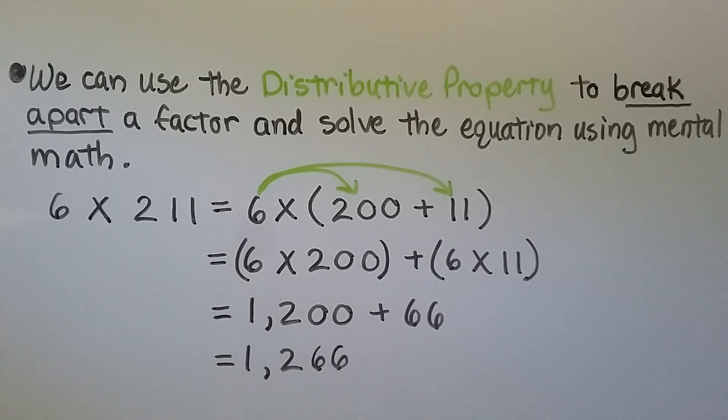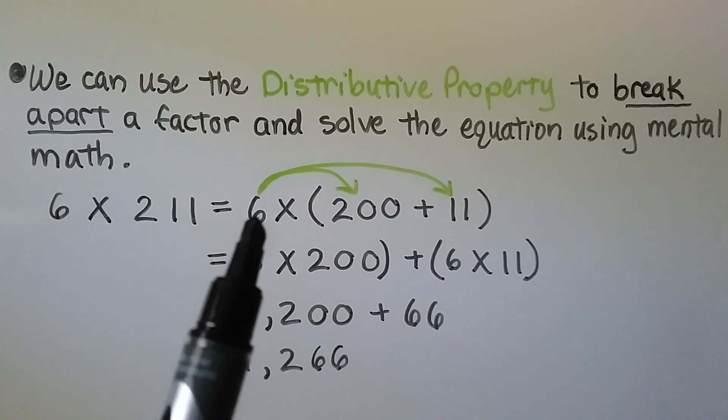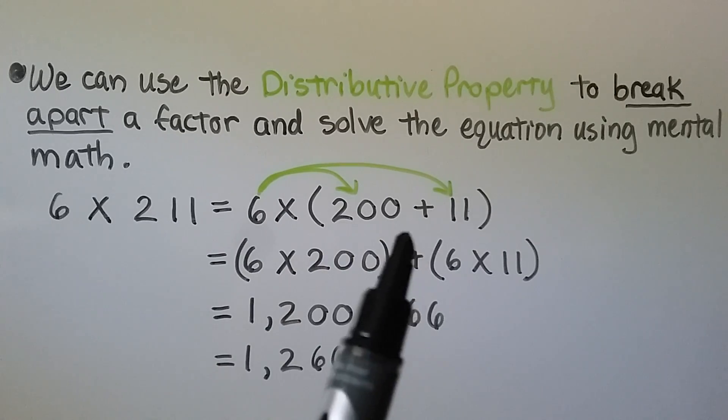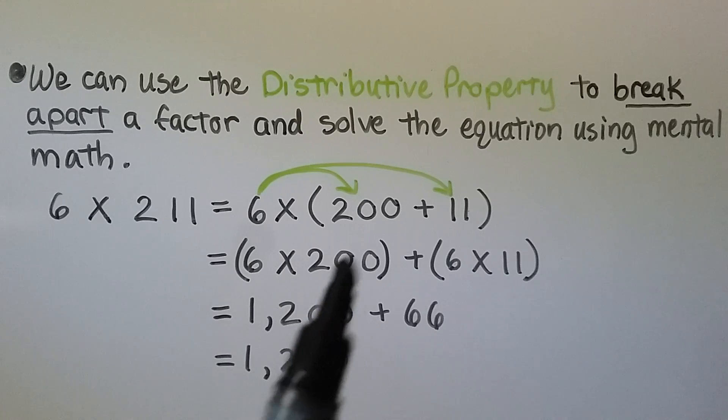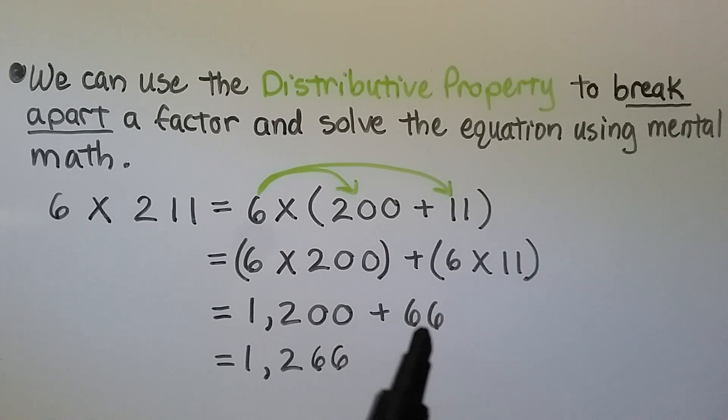Here we have another example where we can use the distributive property to break apart a factor and solve the equation using mental math. We have 6 times 211. We think 6 times 200 plus 11. 6 times 200 is 1,200. 6 times 11 is equal to 66. Now we just add the 1,200 plus 66 to get 1,266.